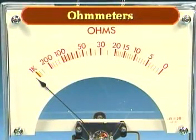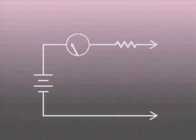Now let's consider ohmmeters. A simple ohmmeter can be pictured as a circuit containing an ammeter, a resistor, a power supply, and a pair of leads.